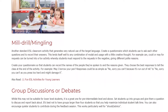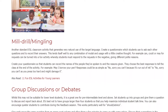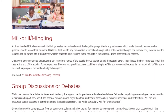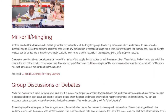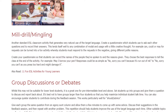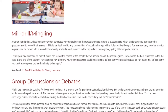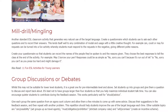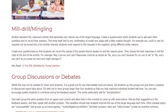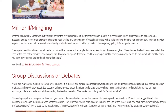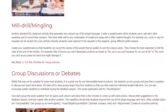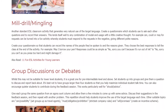Create your questionnaire so that students can record the names of the people they've spoken to and the reasons given. They choose the best responses to tell the class at the end of the activity. For example: 'May I borrow your pen?' Responses could be as simple as 'No, sorry you can't because it's run out of ink,' to 'No, sorry you can't as you press too hard and might damage it.'